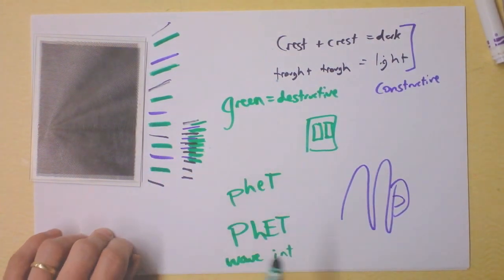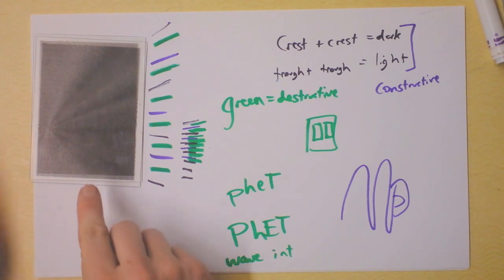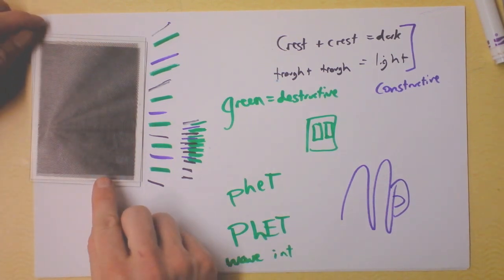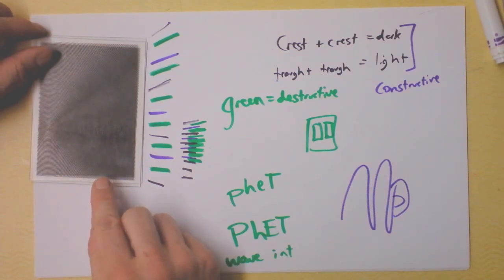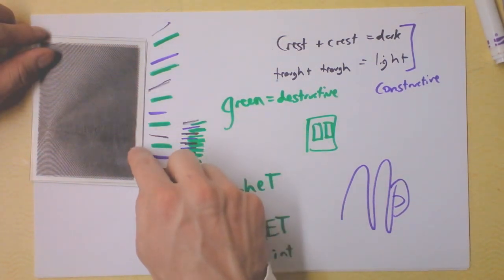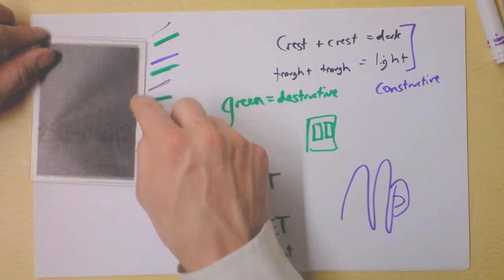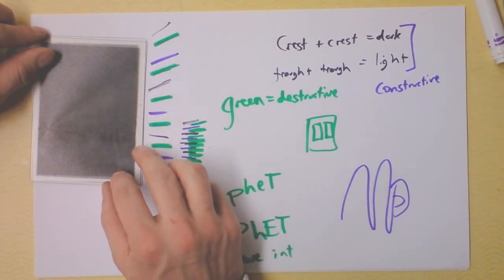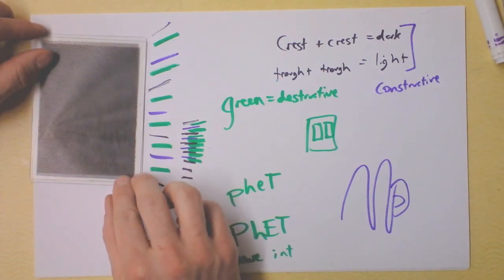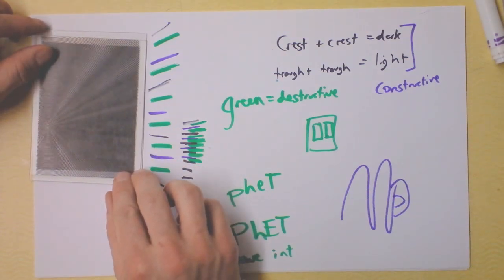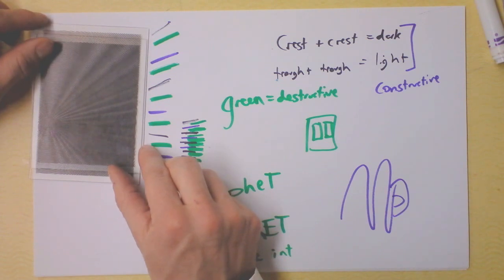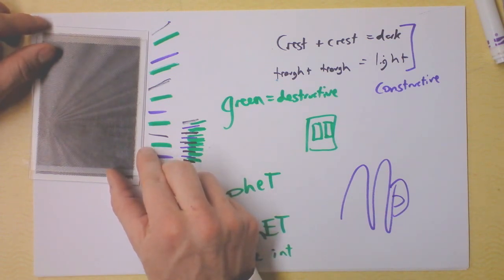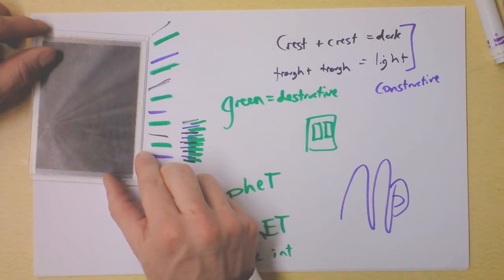The key takeaway from this cool moiré pattern is: as you get the sources closer to each other, the spacing between the crest-crests and trough-troughs - the constructive and destructive interference fringes - increases. Watch: as the sources get farther away from each other, the separation between the fringes - these are called fringes - decreases. As sources get closer together, fringe separation increases.